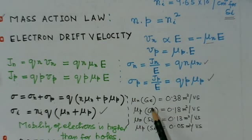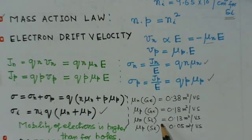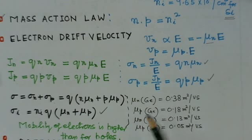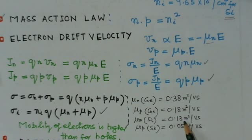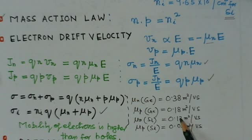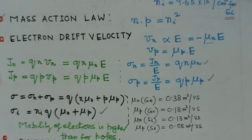Observing mobility values for germanium and silicon, the mobility of electrons is higher than that of holes. In silicon also there is a marked difference between the mobility of electrons and holes — electrons are more mobile compared to holes.